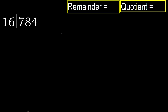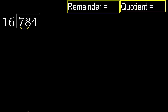784 divided by 16. 7 is less than 16, therefore move to the next digit. 78 is not less than 16, therefore we work with 78.